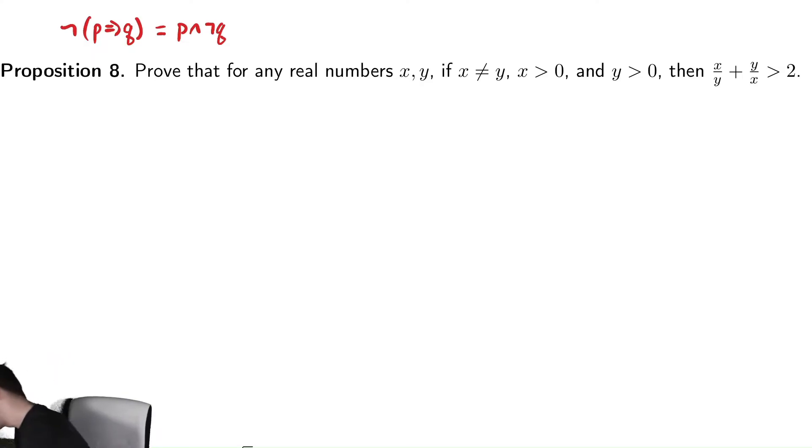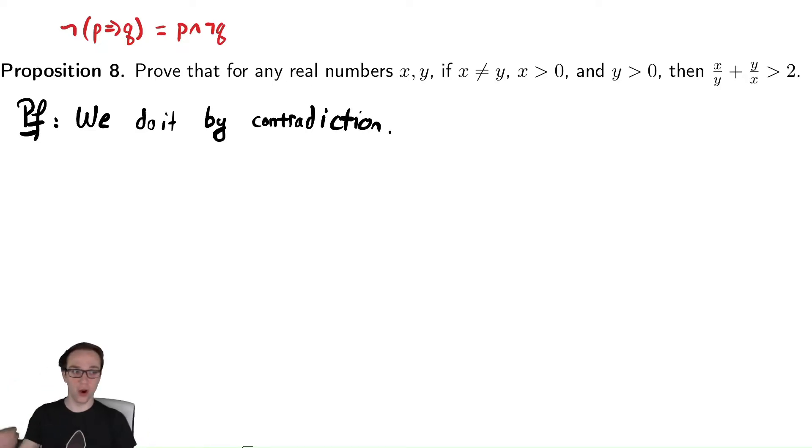So we're going to do a proof by contradiction, just like with contrapositive. We want to let the reader know that we're doing this by contradiction. We do it by contradiction. The original statement was a for any real numbers, which means that the opposite of this would be that there exists real numbers such that they satisfy the hypotheses and don't satisfy the conclusion.